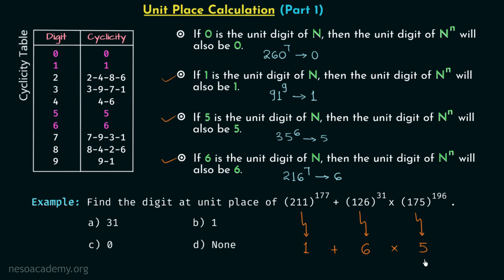Six multiplied by five is equal to 30. Then 30 plus one gives us 31, and the unit digit is clearly one. So one is our answer, and option B is correct. This is all for this lecture. In the next lecture we are going to discuss the cases when we have digit 4 and digit 9 at the unit place.